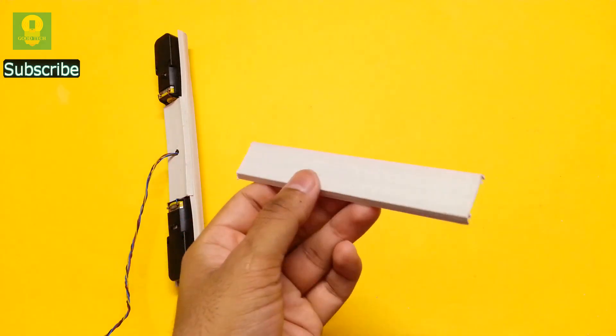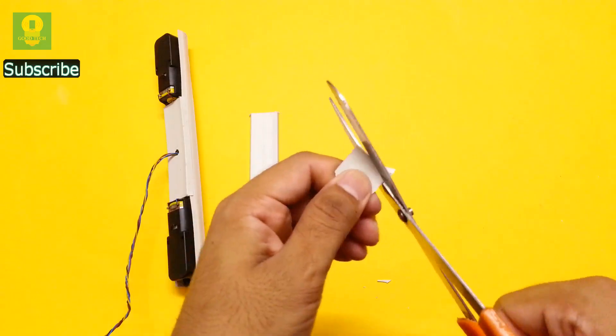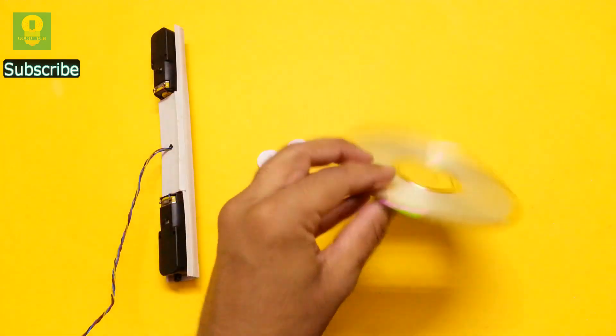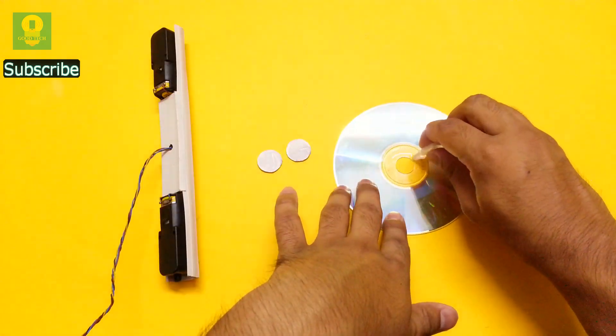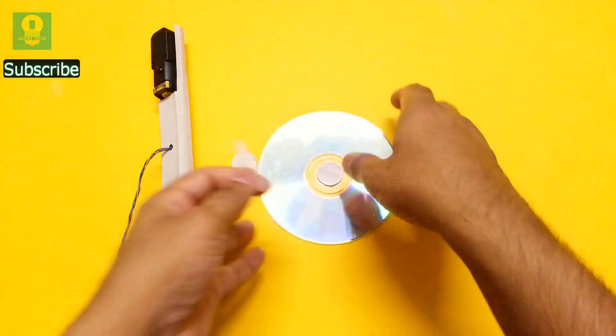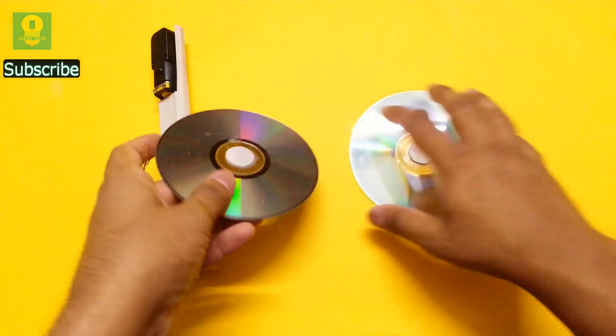Now take the remaining plastic cover and using scissors, cut two circular pieces. Take a spare CD and using super glue, paste a plastic circle at the center. Flip the CD and repeat the step on the other side as well. Make two similar pieces.